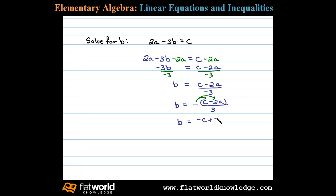And then one more step, we'll use the commutative property and put the positive term in the front, so we'll have 2a minus c over 3, and that's what we see in the textbook.